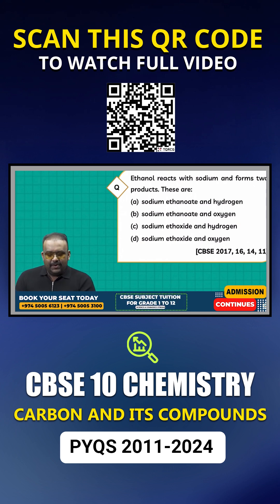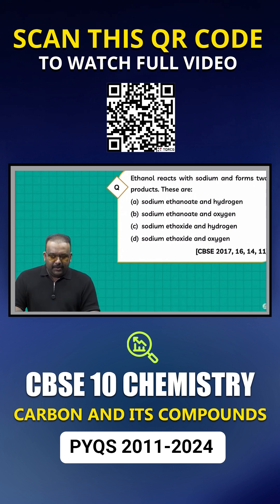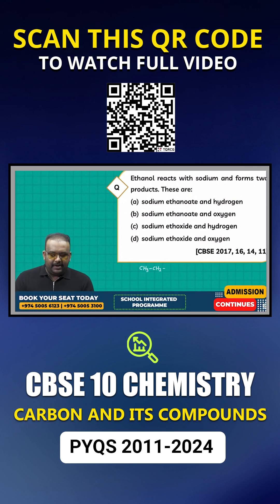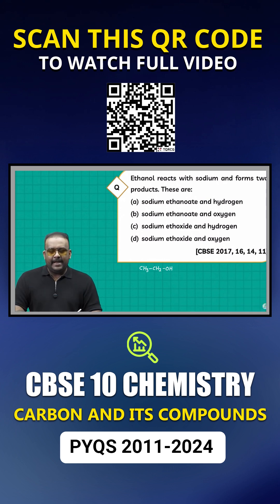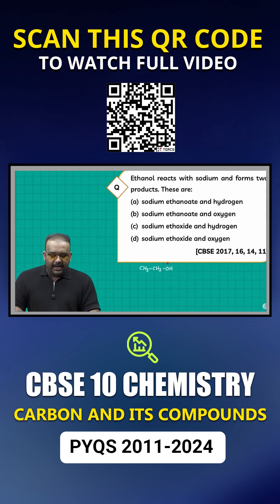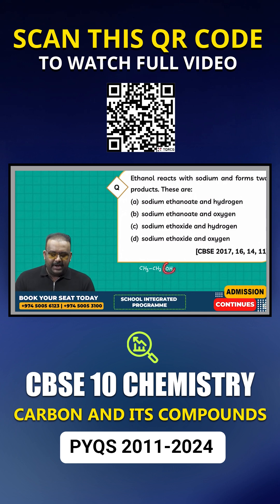Ethanol is the second member of the homologous series of alcohols, the first member being methanol (CH₃OH). Ethanol is CH₃CH₂OH. Every compound which contains the functional group -OH is called an alcohol.